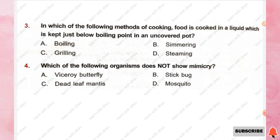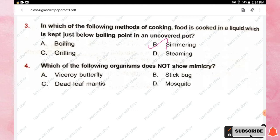Question number four: which of the following organisms does not show mimicry? Options are viceroy butterfly, stick bug, dead leaf mantis, and mosquito. The right answer is option D, mosquito.